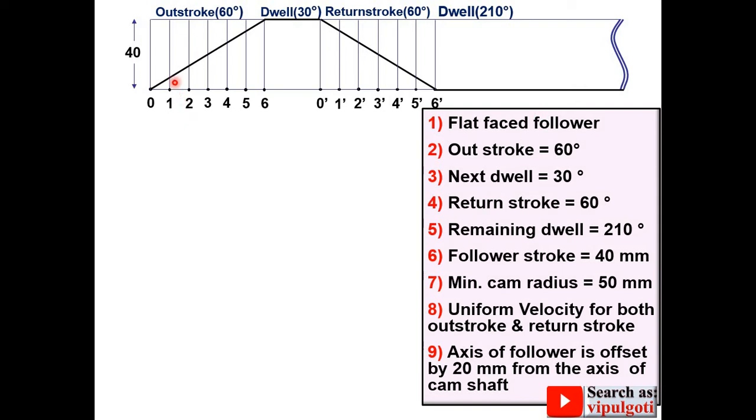Now mark the intersection points and give the name as a, b, c, d, e, f. Similarly for the return stroke mark the intersection points and give the name as g, h, i, j, k, l. This is your displacement diagram. Keep in mind that in the examination you draw only these four lines as dark line. The remaining work should be light.